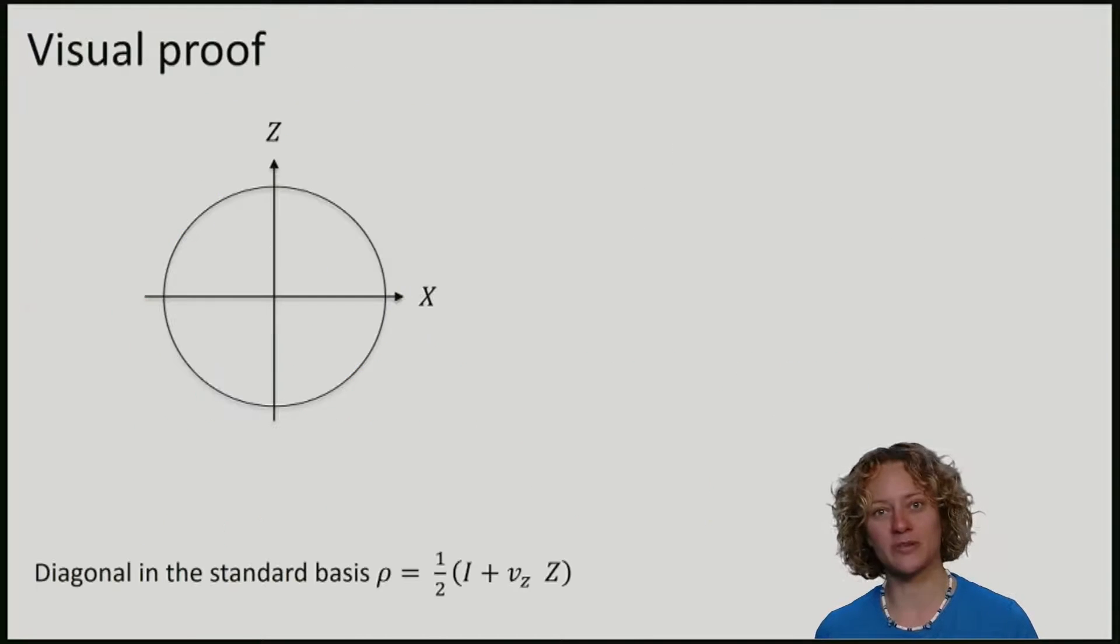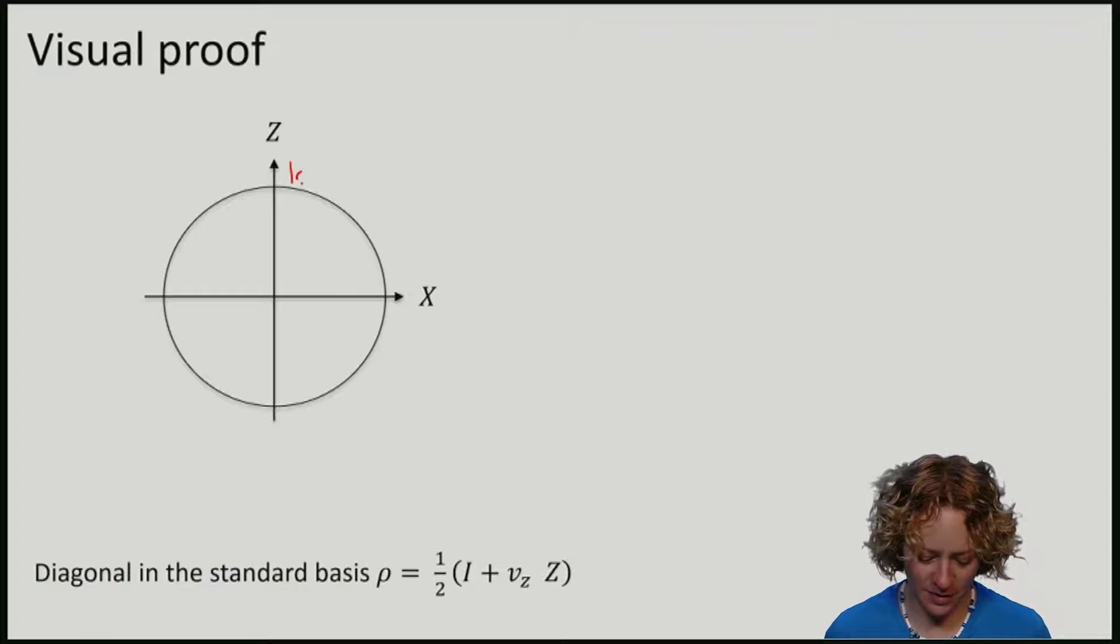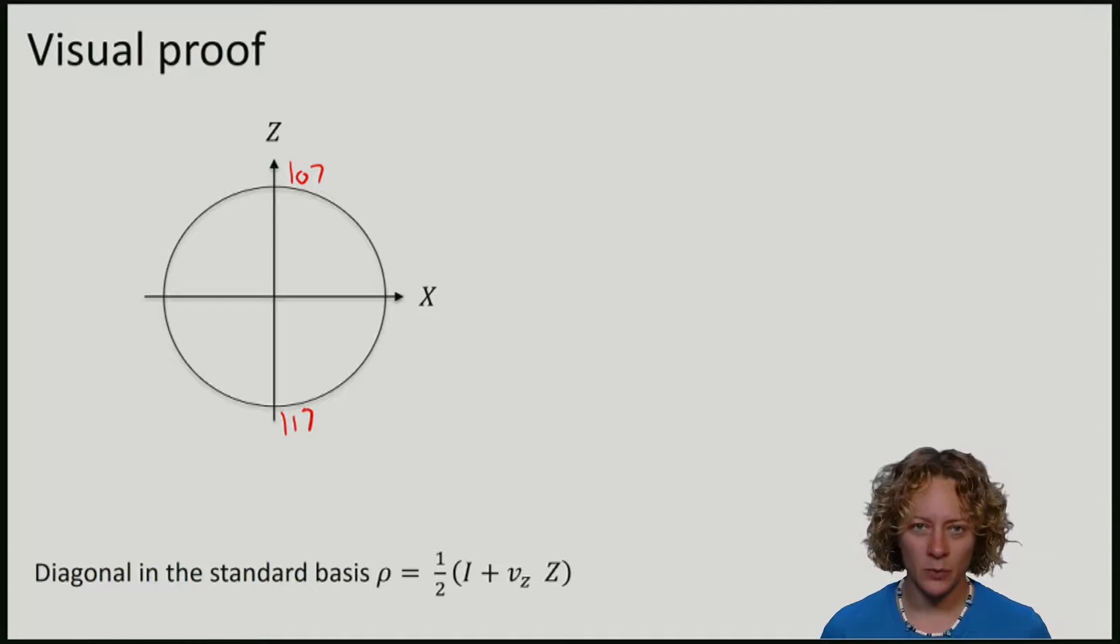If you think about the Bloch sphere representation, there is actually a very nice geometrical picture of this. Namely, if I draw the elements 0 and 1 in the XZ plane, then if we average these two points, we end up exactly at the origin at the maximally mixed state.